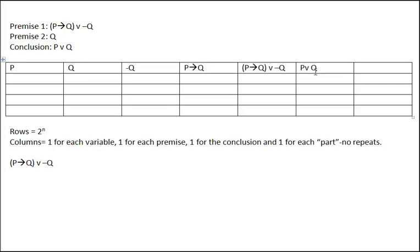Once you have the headers on top, we fill in the T's and F's. For the variables, this always follows the same pattern: go to the column furthest to the right and alternate T and F until we run out of rows — T, F, T, F. Then head to the left and alternate groups of two. A two-variable table with p and q will always look like this, giving us all possible combinations: both true, both false, p true and q false, p false and q true.